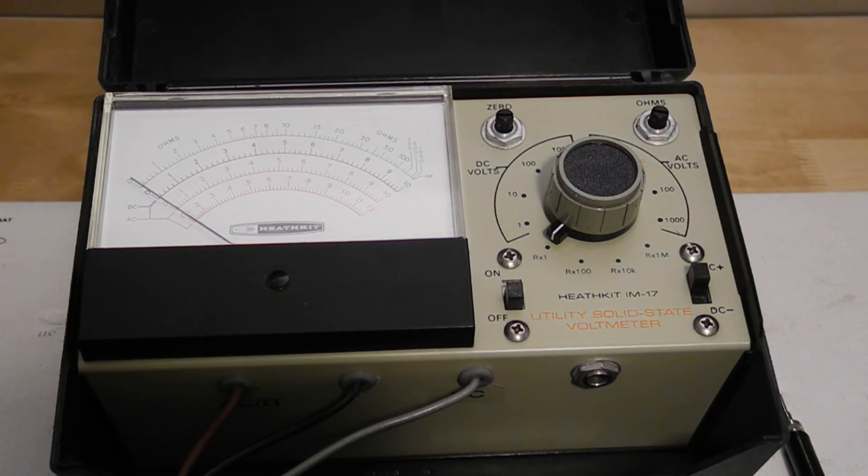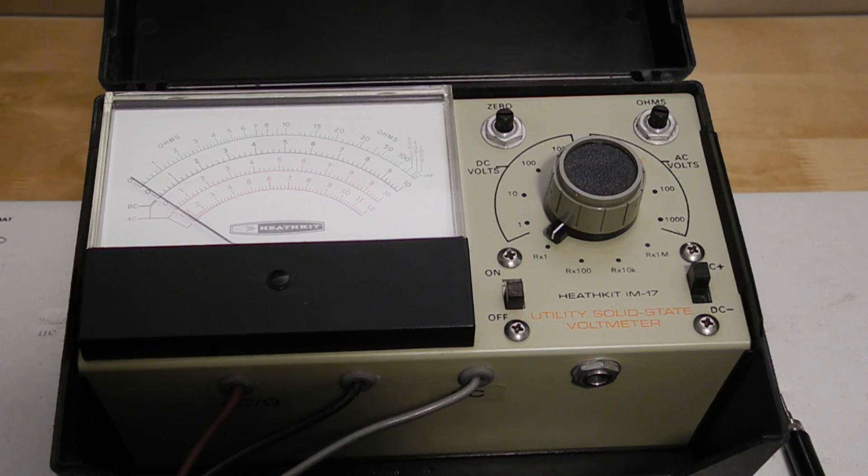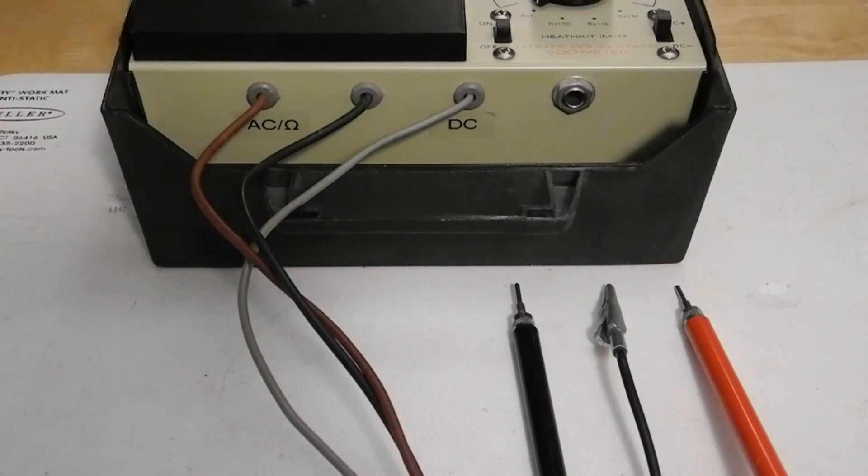The manual calls it a volt ohm meter since it can only measure voltage and resistance or ohms. The requirement to use different test leads for DC and AC and ohms can be a point of confusion. I'm surprised that Heathkit didn't mark the leads or color code the ranges somehow to make it obvious which leads to use.